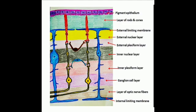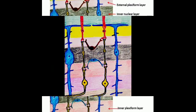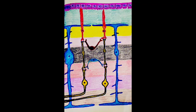Then inner nuclear layer, then inner plexiform layer, ganglion cell layer, layer of optic nerve fibers, and internal limiting membrane. These are the layers to be learned in detail. Let us analyze one by one.